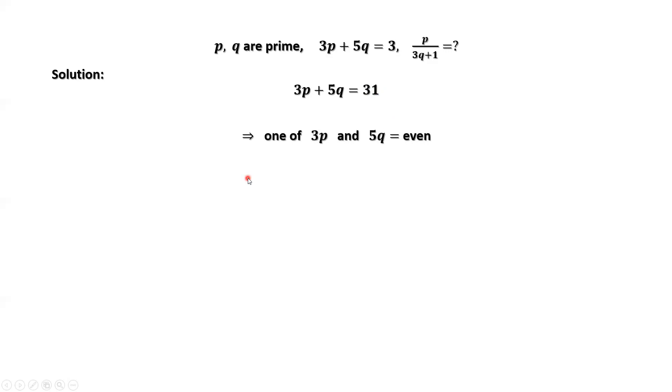This implies one of the 3P and 5Q is even. Both cannot be odd. Odd plus odd is even. However, the right-hand side is odd.